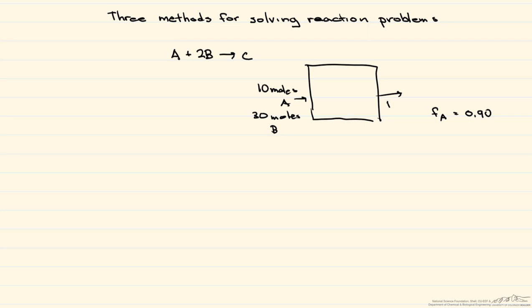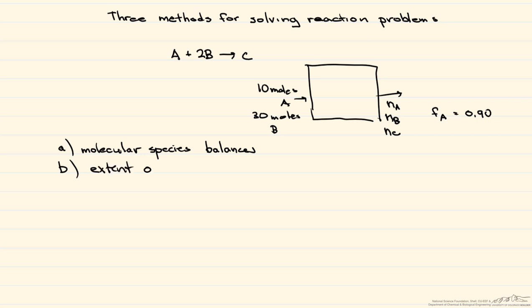That would be N_A, N_B, and N_C. The three methods we're going to use to solve for the products are: molecular species balances, extent of reaction, and atomic species balances.